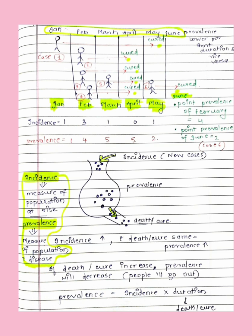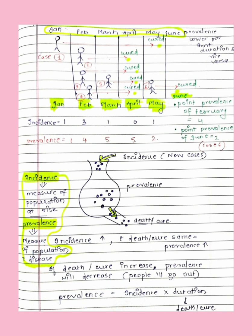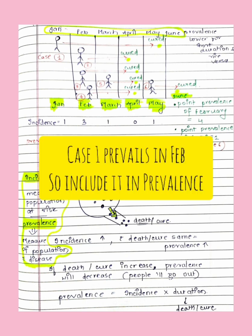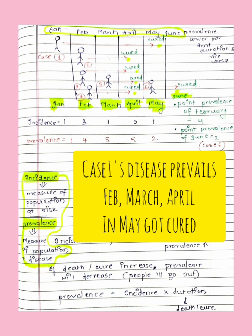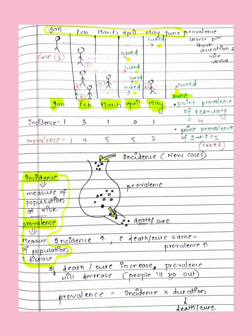Now for prevalence, remember it includes all old and new cases. In January, prevalence is one. In February, we also include case one, because looking at the diagram, the red line for case one started in January and only reaches the green dot — meaning it got cured in June — so the disease is still prevailing in February. Therefore, cases one, two, three, and four are all included in February's prevalence.